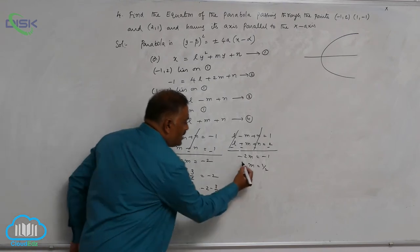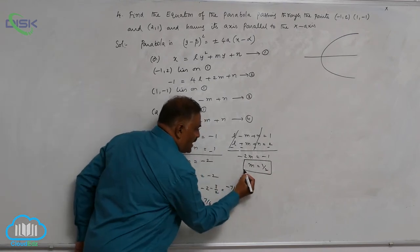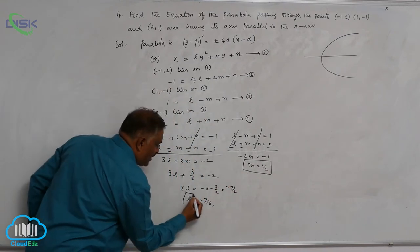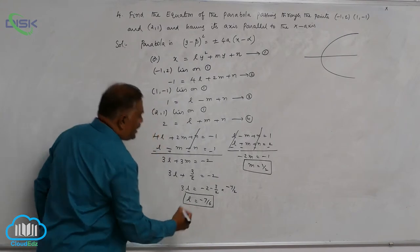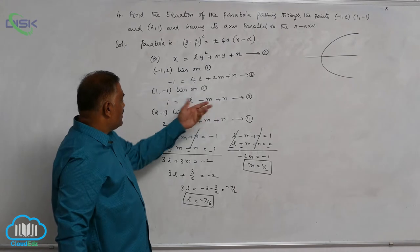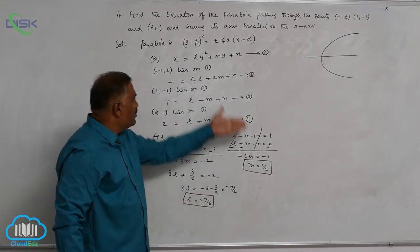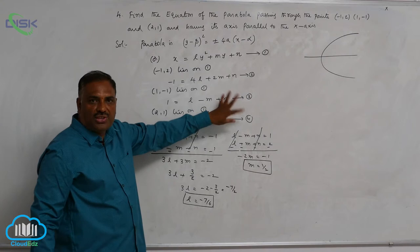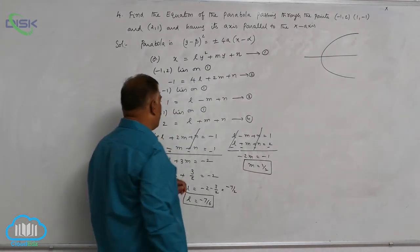We got m value here. Let us make a square box here, and here also. Now, our target is to find out n value. You can check, you substitute l, m value in any of the second or third or fourth equation. Let us take third equation.